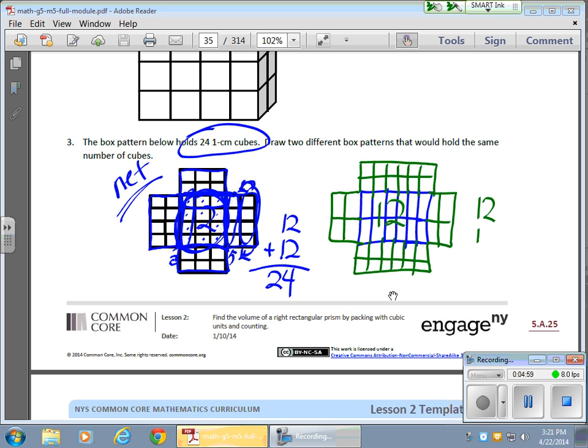...once again, I would have 2 sets of 12, which would give me my 24. Different configuration, because this has 3 sets of 4, and this has 2 sets of 6.